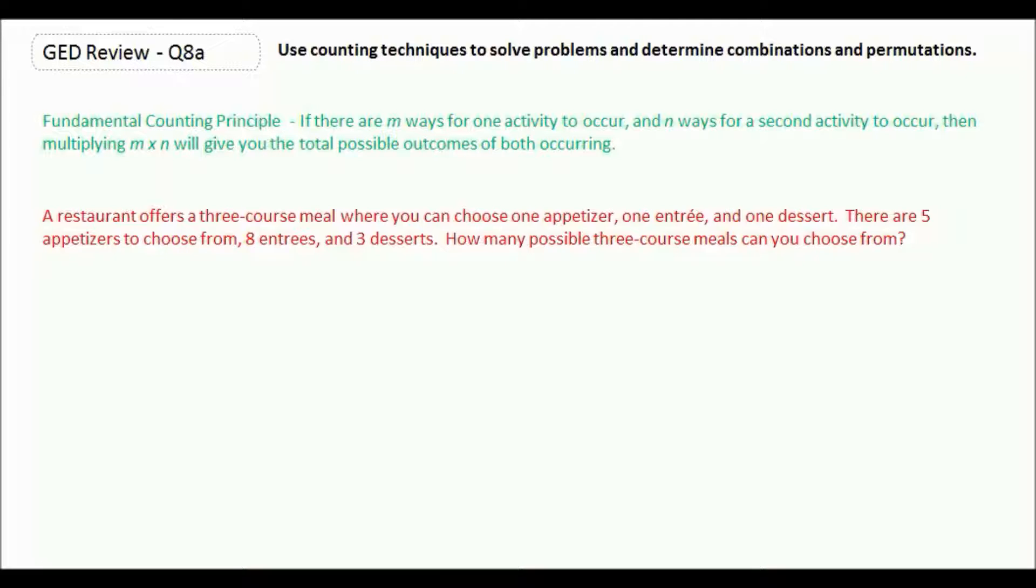In this case, all we have to do is take the number that we have in each category and multiply everything together. So we have five appetizers, eight entrees, and three desserts. We multiply five times eight times three. Five times eight is forty, and forty times three is 120. So there's 120 possible meals to choose from.